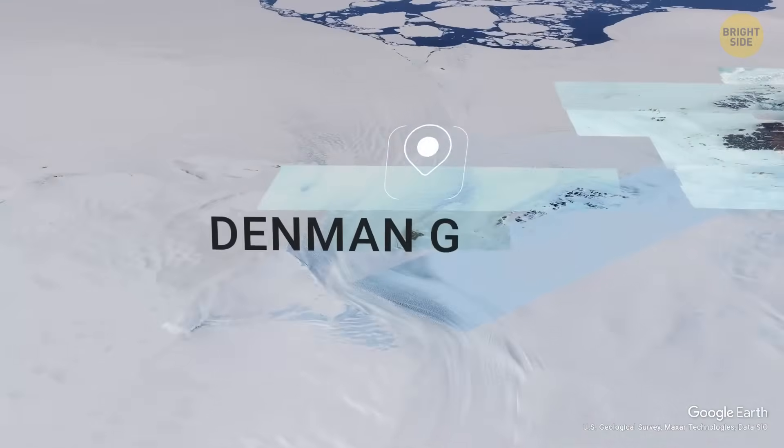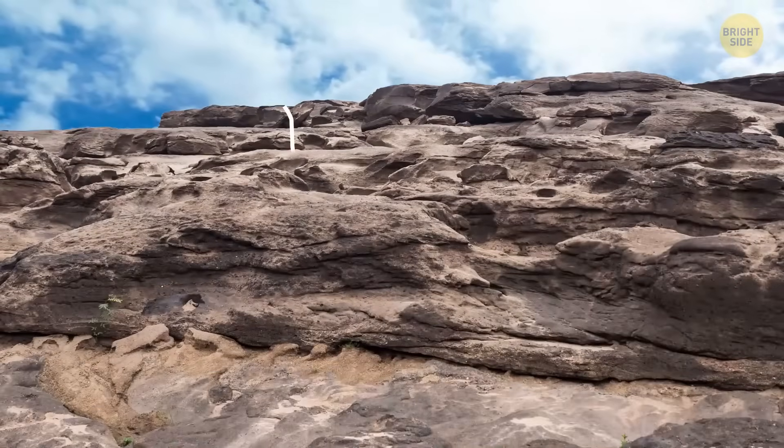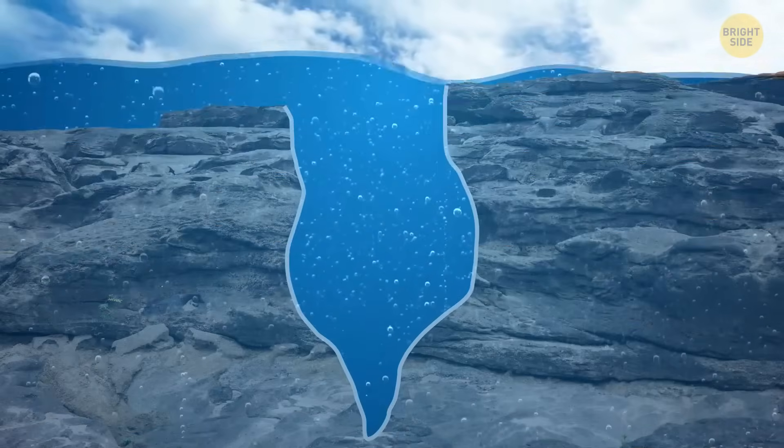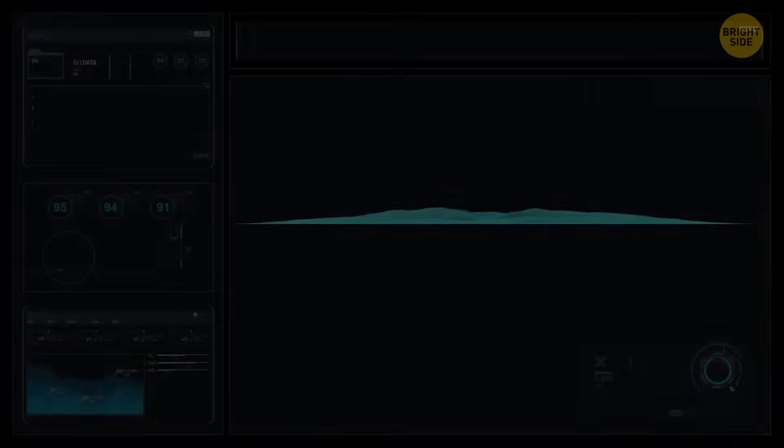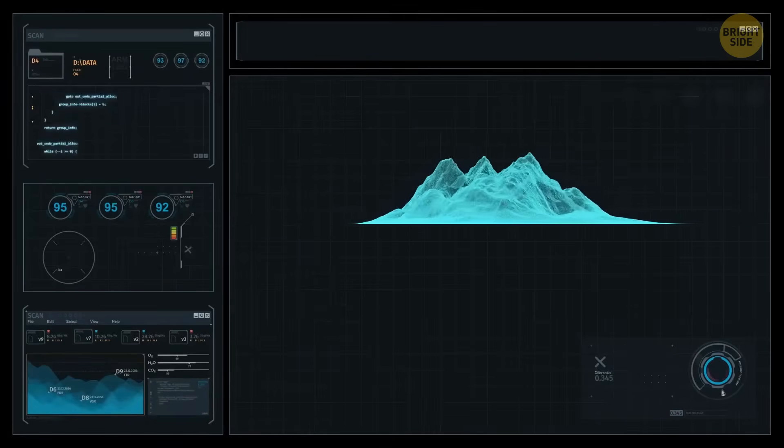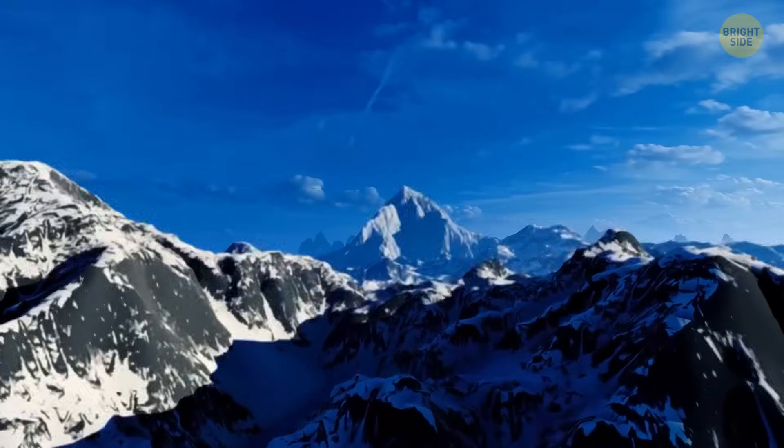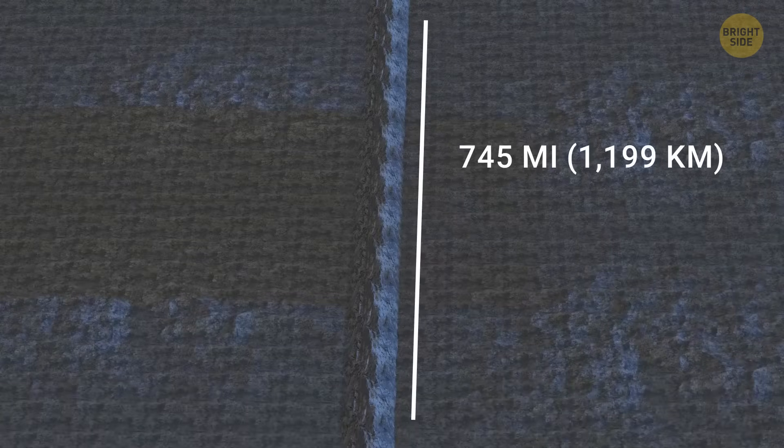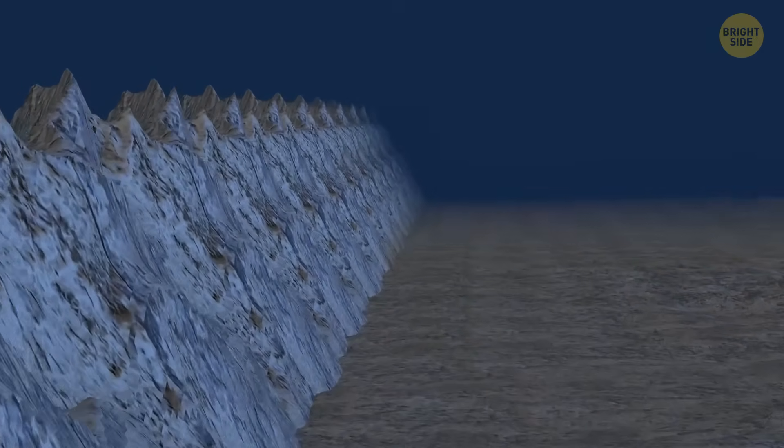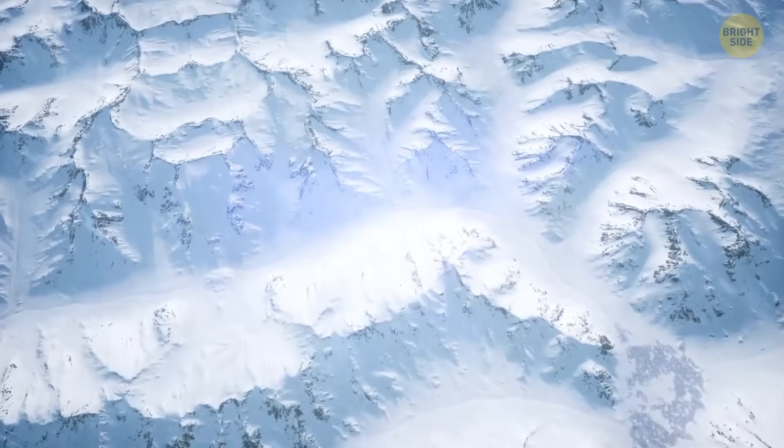Antarctica's snow also hides the deepest canyon on Earth under the Denman Glacier. Well, Mariana Trench is still the deepest point on Earth, but it's a part of the oceanic crust, geologically speaking. Also, in 1958, explorers found a huge mountain range under the ice, as big and tall as the famous Alps Mountains. The range stretched for about 745 miles with peaks as high as 1.7 miles. And all this magnificence is buried under tons of ice. Who knows what else we might find there?